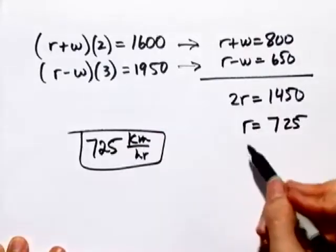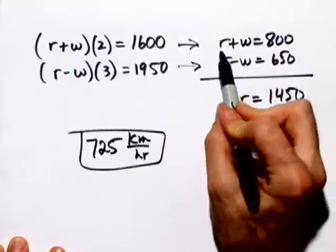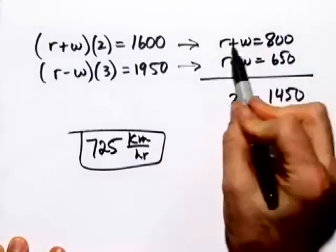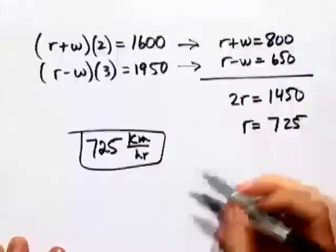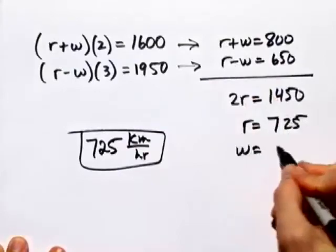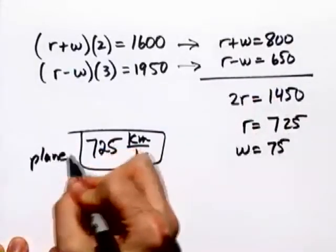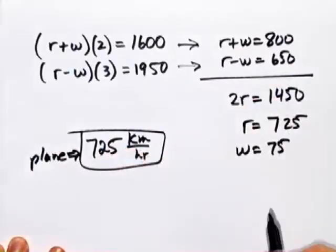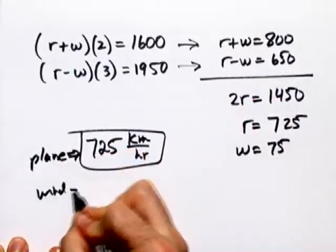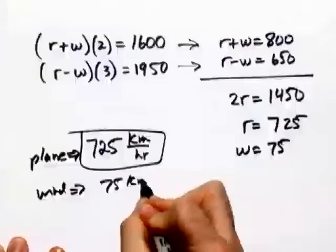When the plane's flying with the wind, it adds the speed w. Since we know r is 725, plugging that in here and subtracting from both sides, we see the w would end up being 75. So we know that the plane travels at a rate of 725 kilometers per hour. And the wind travels at a rate of 75 kilometers per hour.